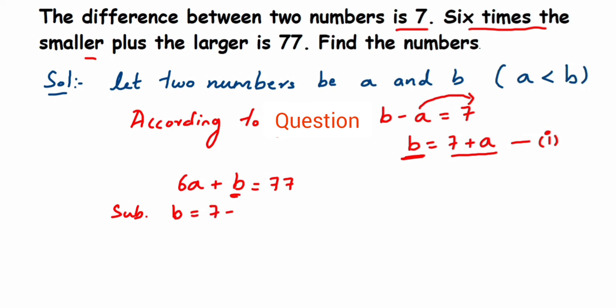After doing that, we'll get 6a plus, in place of b I'm placing 7 plus a, equals 77. Now from here we can add the variables: 6a plus a will be 7a. And we can transpose this 7 to the other side, so it becomes 77 minus 7.